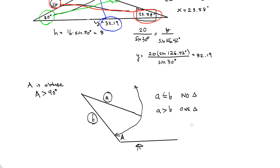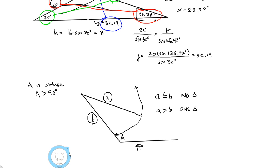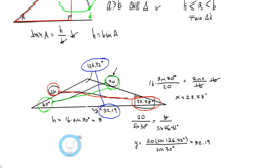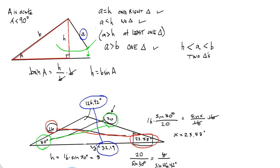Our last situation is the two-triangle case. The only remaining circumstance is when the opposite side is bigger than the height but smaller than B. In that situation you can get two triangles. We're going to take a look at that next, in Part 2 of the ambiguous case of the Law of Sines, side-side-angle. Thanks.